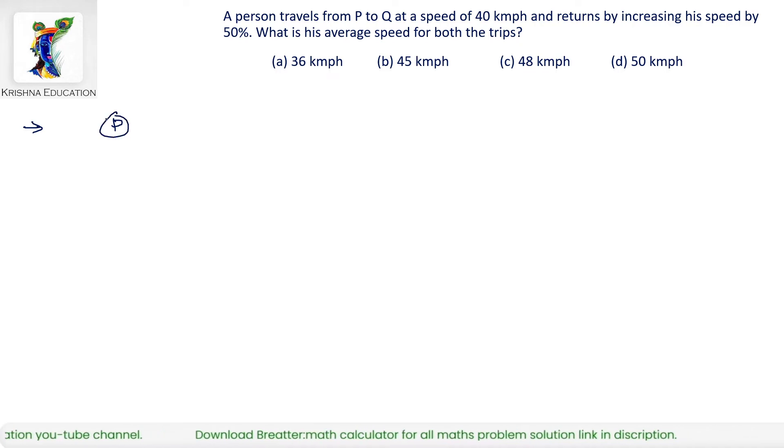Here you get the place P and Q. A person travels from P to Q at speed of 40 kmph and returns at a speed of 50% more than 40 kmph. That means returns by 150% of 40 kmph.